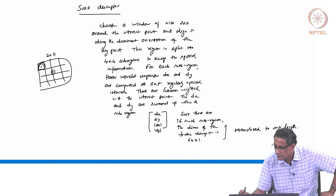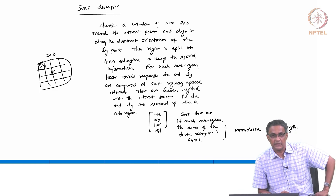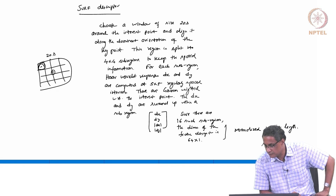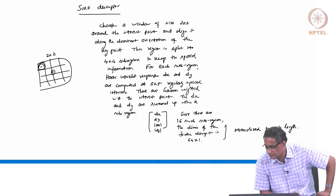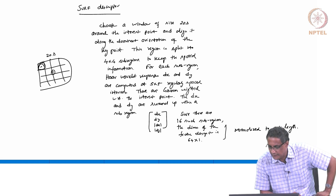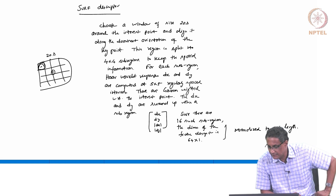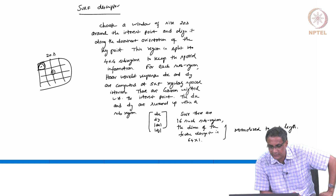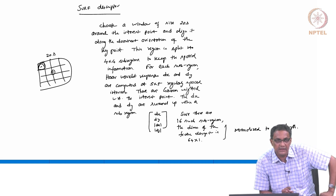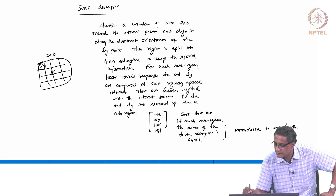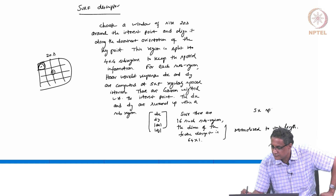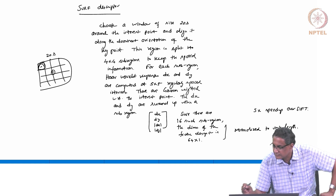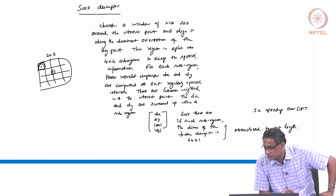Normalizing to unit length takes care of non-uniform as well as uniform illumination. Rotation invariance is there, scale invariance is also there, and so everything we saw in SIFT is present here, except that this gives a 6x speedup over SIFT because of the approximations made using box filters.